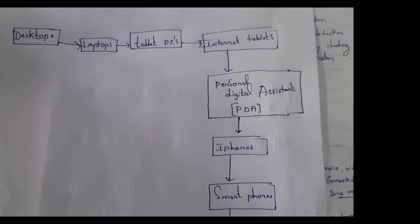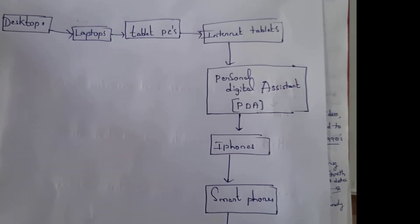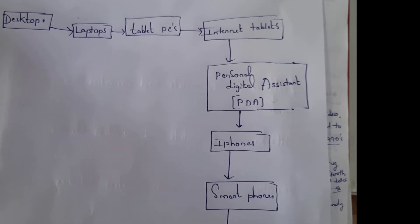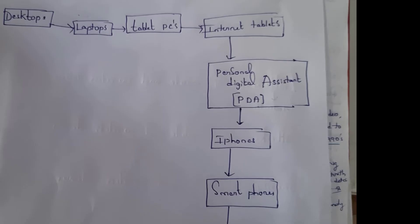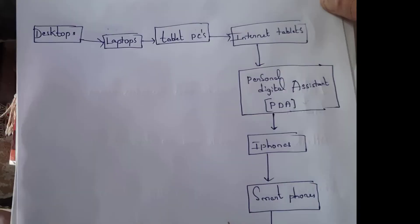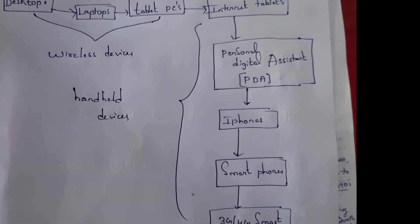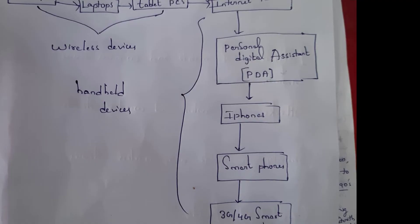This diagram explains the growth of mobile and wireless devices. From desktops, laptops were introduced first. After laptops, tablet personal computers were introduced. After tablet PCs, internet tablets. After internet tablets, PDAs — personal digital assistants. After PDAs, iPhones. After iPhones, smartphones were introduced. Now at present we are using 3G and 4G smartphones. Desktops, laptops, and tablet PCs are wireless devices, and the remaining are handheld devices.